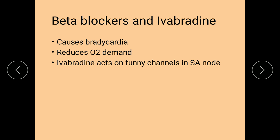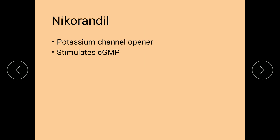Beta blockers and ivabradine cause bradycardia, thereby increasing blood flow to the heart. Ivabradine acts on the funny channels in the SA node. Nicorandil is a potassium channel opener that causes hyperpolarization and relaxation of smooth muscles, and acts by stimulating cyclic GMP.